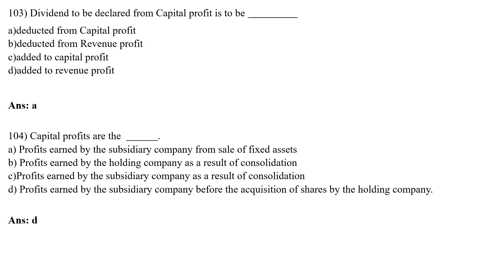MCQ 104: Capital profits are defined as — Option A: profit earned by the subsidiary company from sale of fixed assets; Option B: profit earned by the holding company as a result of consolidation; Option C: profit earned by the subsidiary company as a result of consolidation; Option D: profit earned by the subsidiary company before the acquisition of shares by the holding company. The correct answer is Option D. So capital profits are the profits earned by the subsidiary company before the acquisition of shares by the holding company.